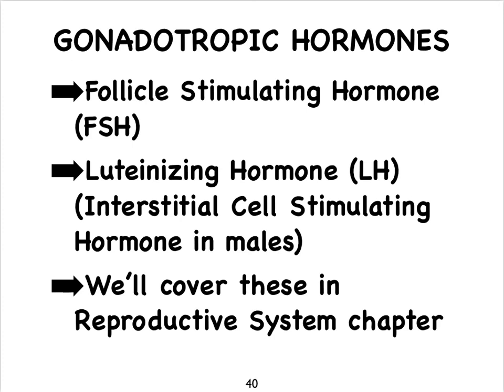The anterior pituitary also produces tropic hormones controlling our gonads — the ovaries in females and testes in males. These are collectively called the gonadotropic hormones. Both males and females have follicle-stimulating hormone (FSH) and luteinizing hormone (LH) — in males, LH is sometimes called interstitial cell-stimulating hormone (ICSH). We'll look at these in more detail in the reproductive system.